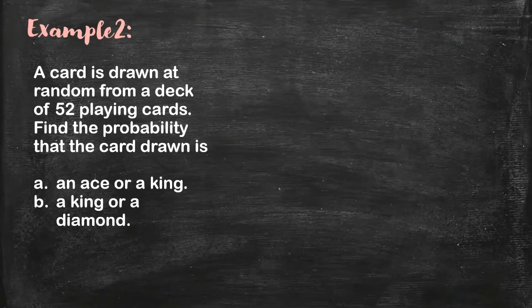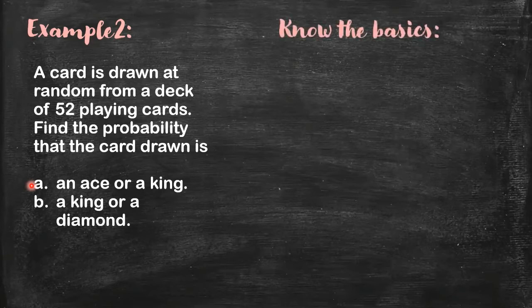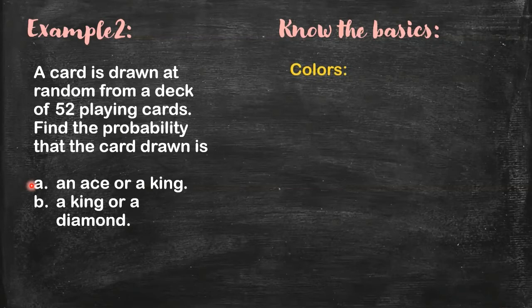Let's have this second example. A card is drawn at random from a deck of 52 playing cards. And then we get the probability of these two. Before we deal with this problem, it's nice to know the basics. What do I mean by that? For example, colors.